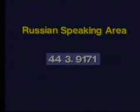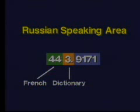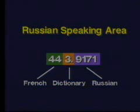In a Russian-speaking area, the number would be 443.9171, wherein French is 44, 3 is dictionary, and 9171 is Russian. In a library where neither language is predominant — say, in an Indian library — the number would be 491.7341. Please note that the rule is not about which language comes first, but whichever comes later in the sequence of numbers. That's the reason we get the number 491.7341.